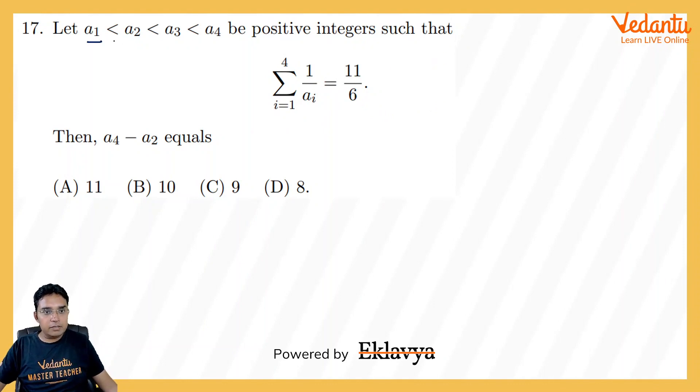Here if I increase the values of a1, a2, a3, a4, the reciprocal of them will become lesser. So if I increase a1, a2, a3, a4 beyond certain value, their sum may not be equal to 11 by 6.